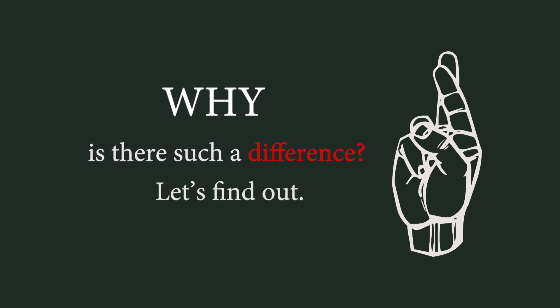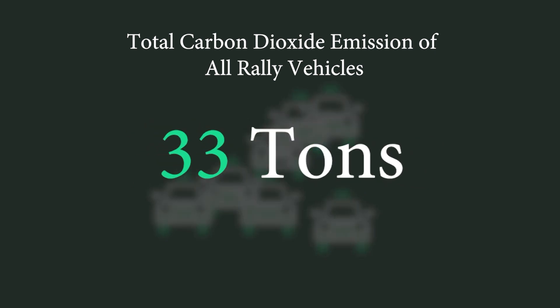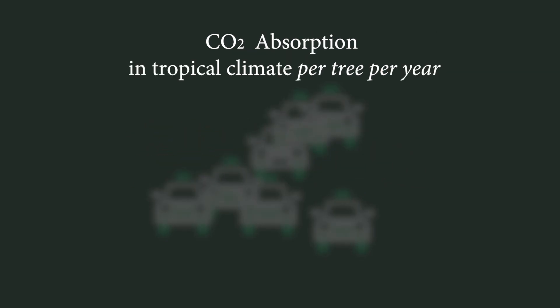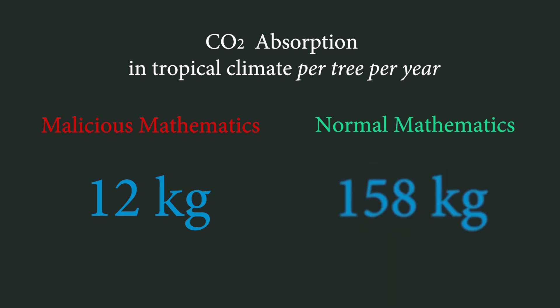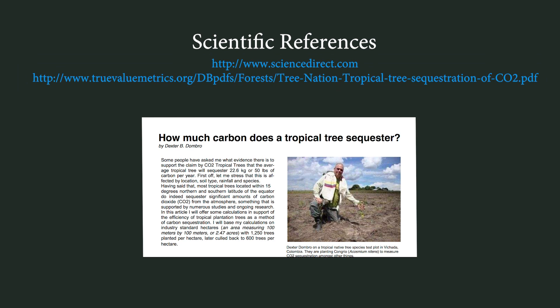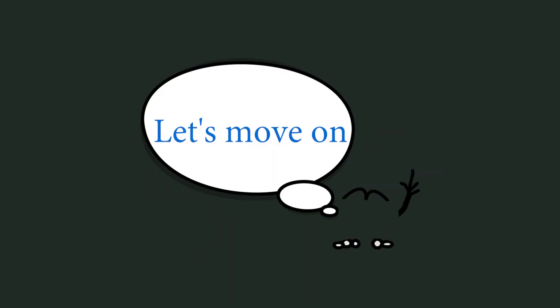Total carbon dioxide emission of all Rally vehicles: 33 tons. How much carbon dioxide does a tree in a tropical climate absorb in a year? Malicious mathematics says 12 kg. Normal mathematics says 158 kg. What are the scientific references for the normal mathematics figure? Several ecological studies. What are the scientific references for the malicious mathematics figure? Never mind. Let's move on.